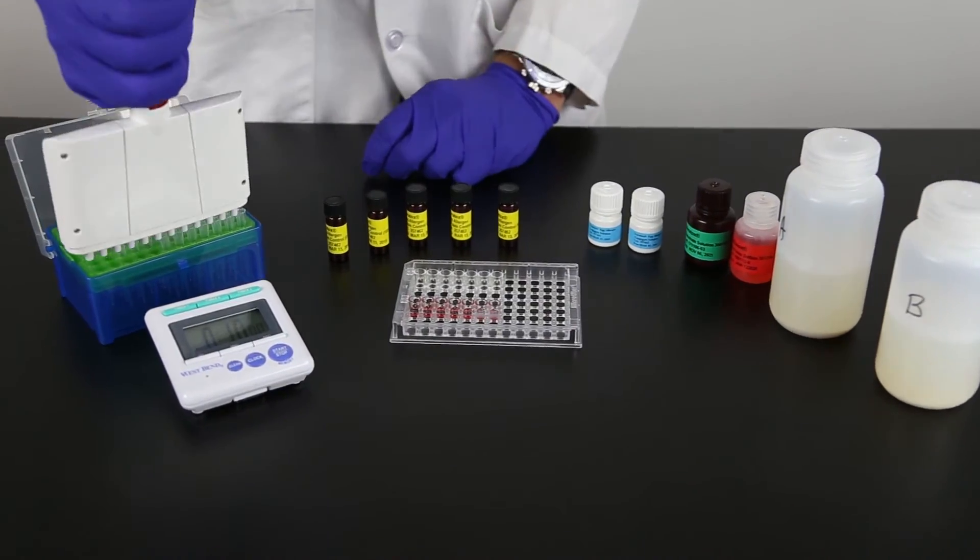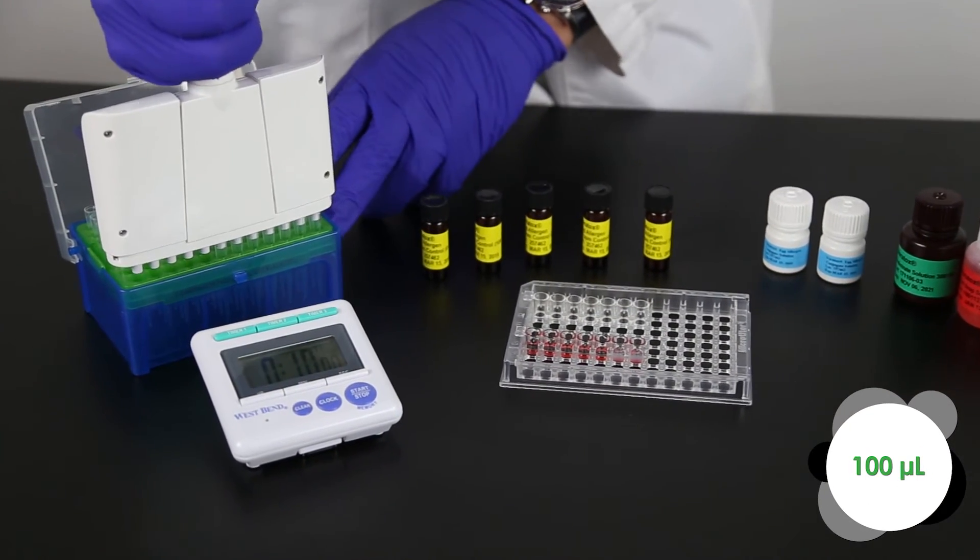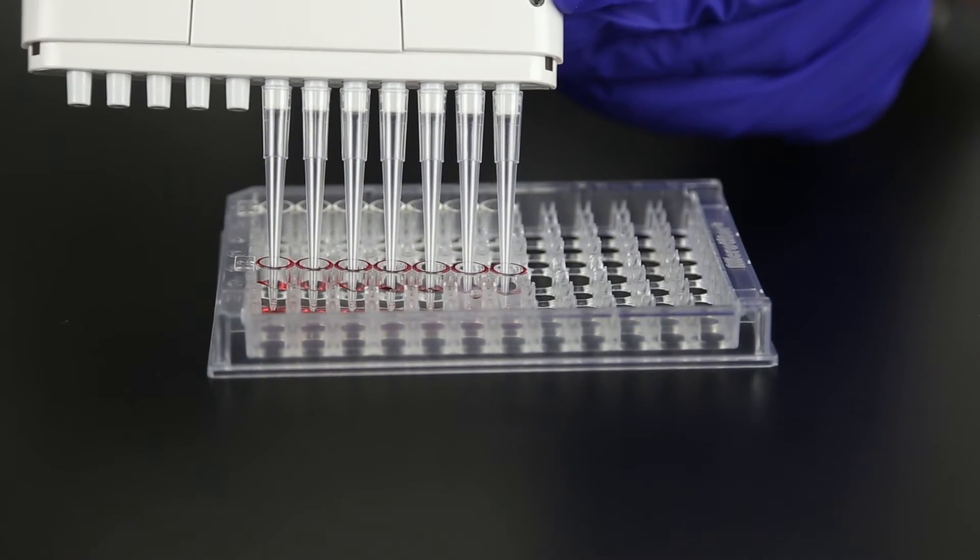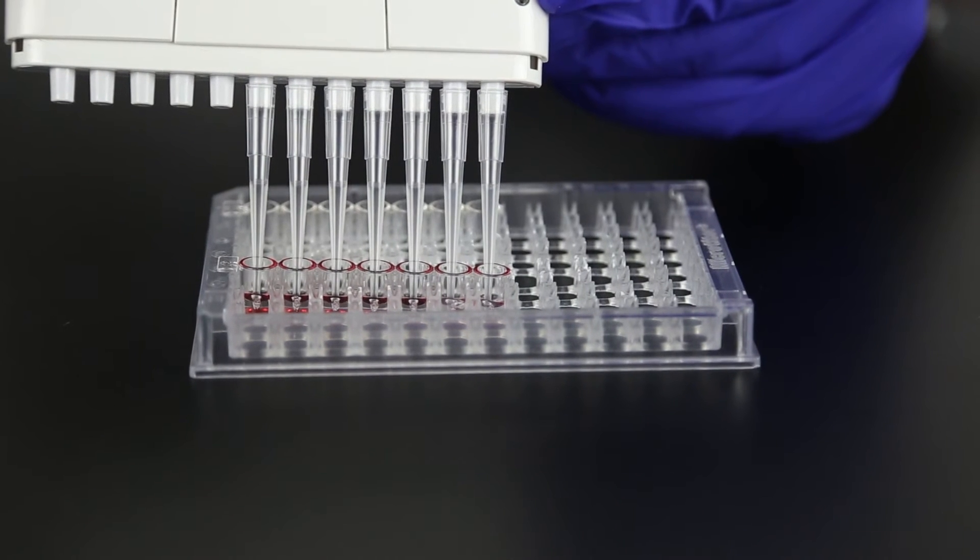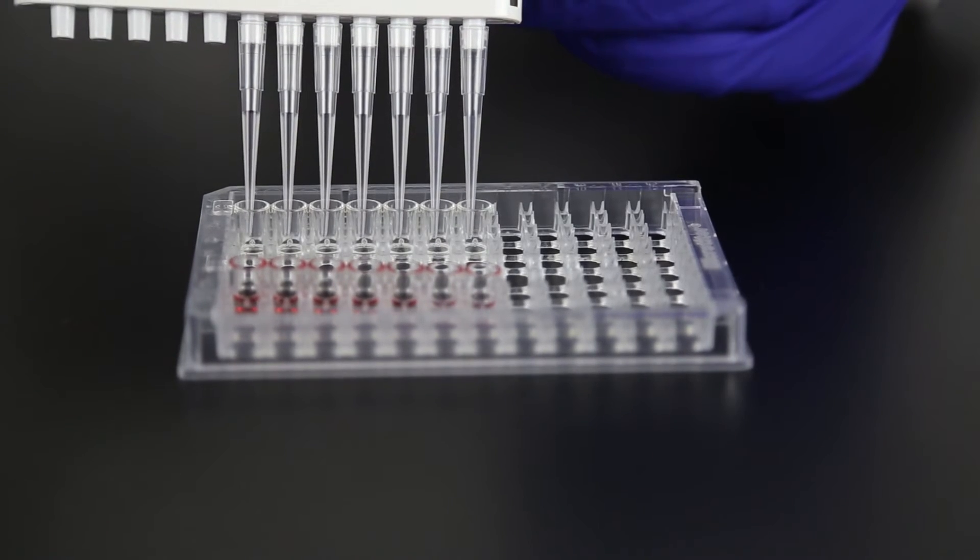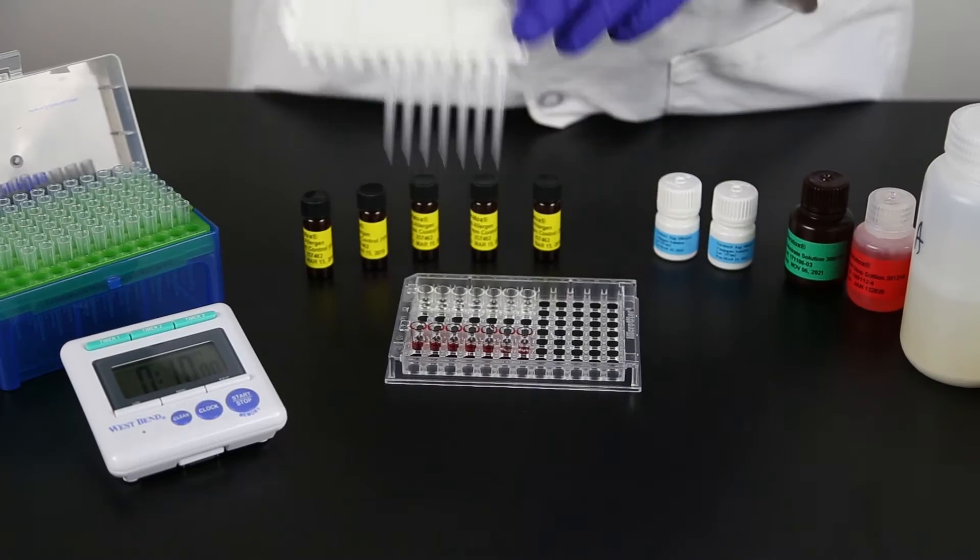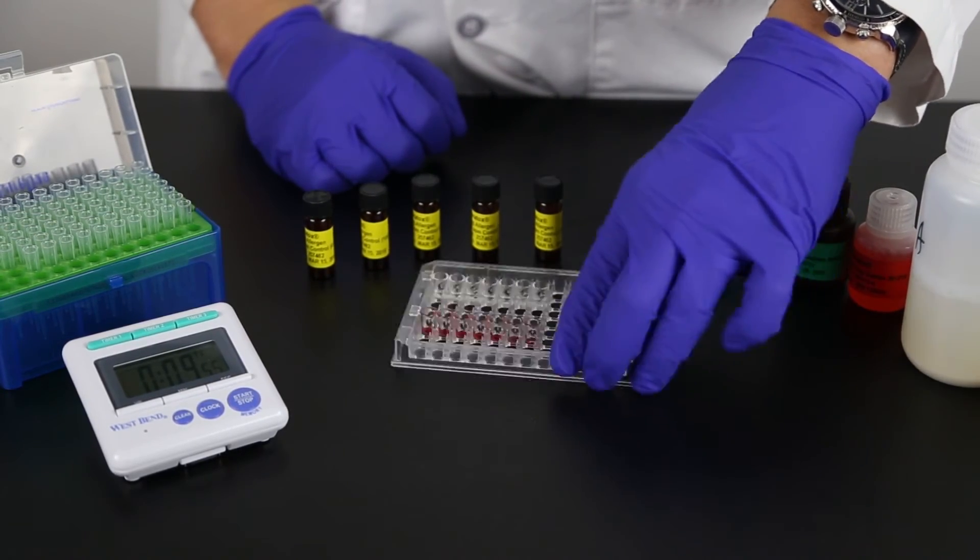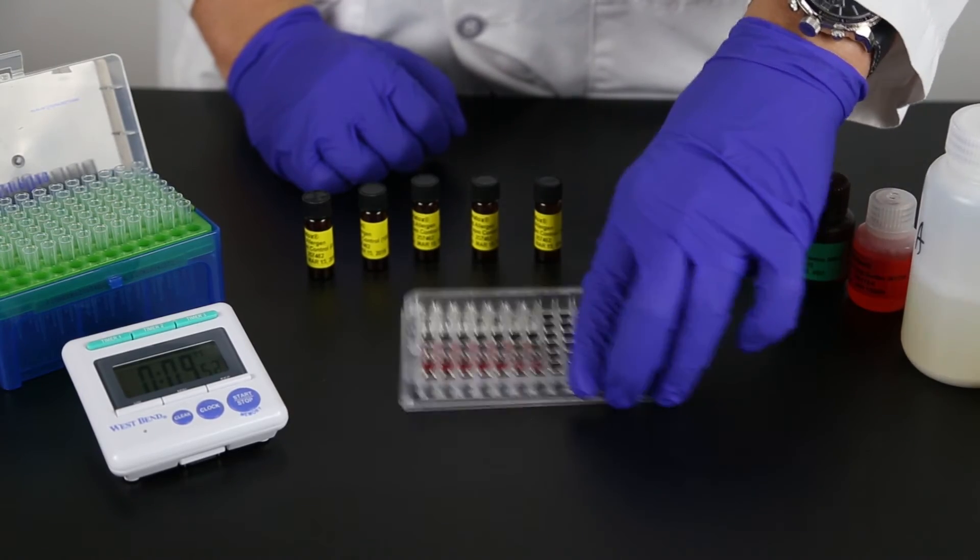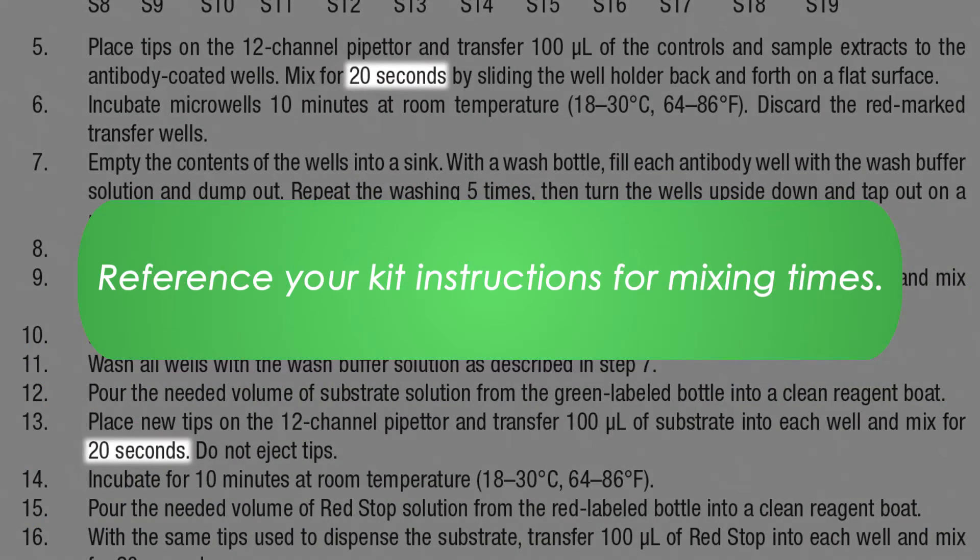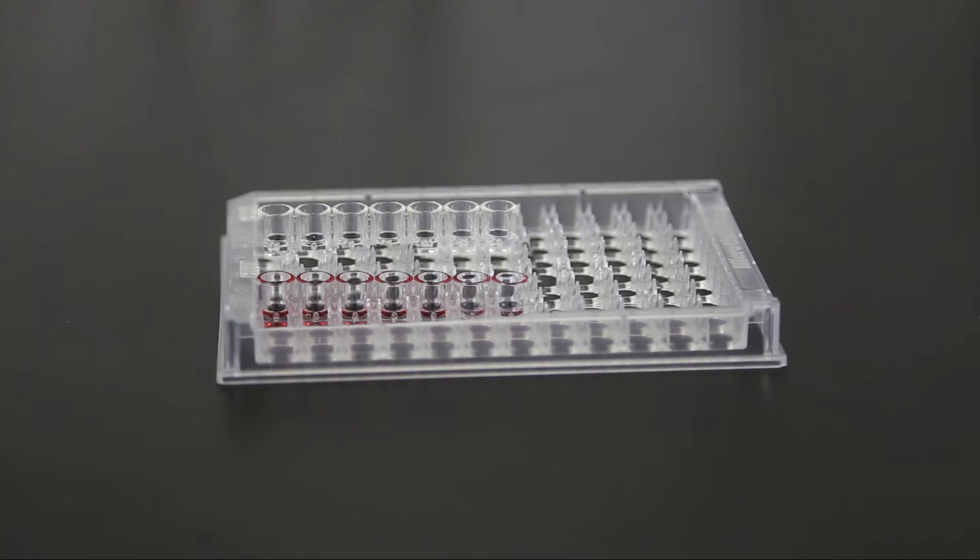Place tips on the 12-channel pipetter and transfer 100 microliters of the reagents from the red marked transfer wells to the antibody coated wells. Be sure to use proper pipetting techniques, including priming the tips and always using new tips. Set timer for 10 minutes. Mix for 10 to 30 seconds by sliding the microwell holder back and forth on a flat surface without splashing and allow wells to incubate at room temperature. The red marked wells can be discarded at this time.